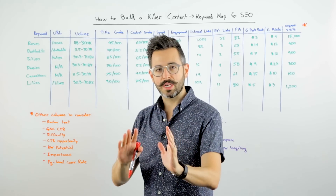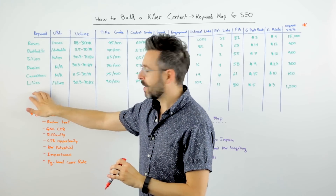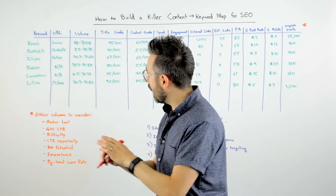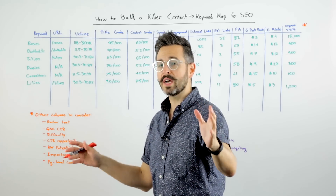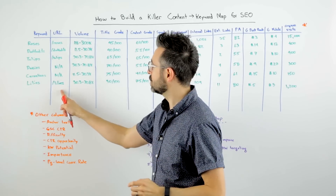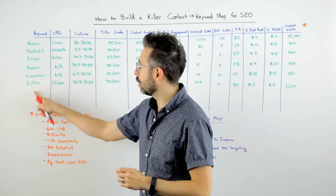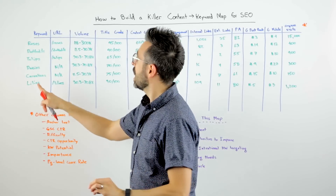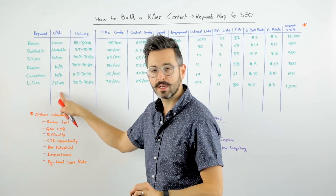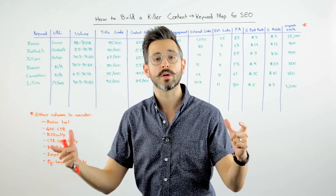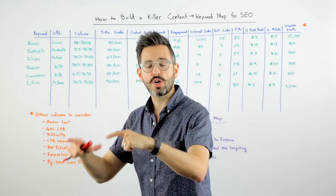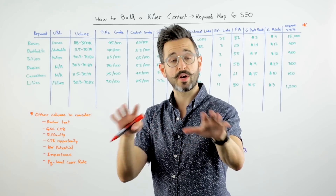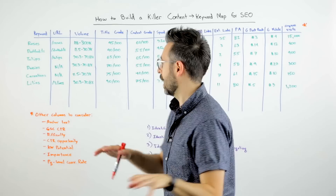What you're trying to build here is essentially all your keywords mapped to all your URLs. If you're doing a comprehensive job, you should find places where you don't have a URL for some keywords, because some keywords haven't been targeted yet but you still want to rank for them. And you should probably have some URLs for which you have no keyword — essentially, you haven't intentionally targeted a keyword with that page yet. This might actually help you prioritize and tackle some of that.